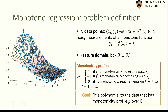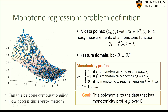On top of all of this, I assume we have what we call a monotonicity profile rho for function f. This means I know how f depends on my features. It's an n-by-1 vector where each entry tells you how f depends on the corresponding feature. If entry j equals 1, f is monotonically increasing with respect to xj; if minus 1, it's decreasing; if 0, there is no monotonicity requirement. The goal is to fit a polynomial to the data with the same monotonicity profile rho over box B.